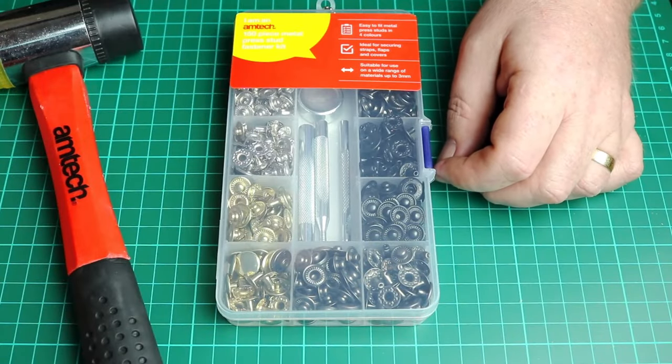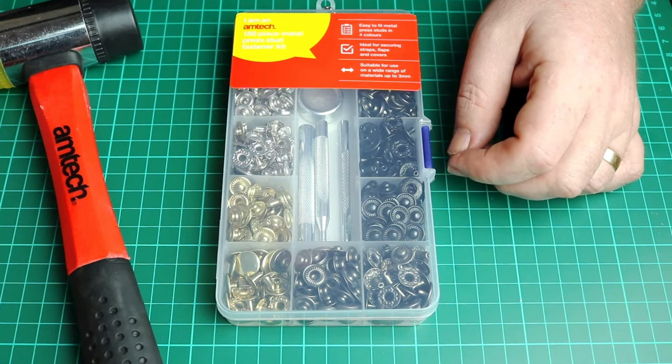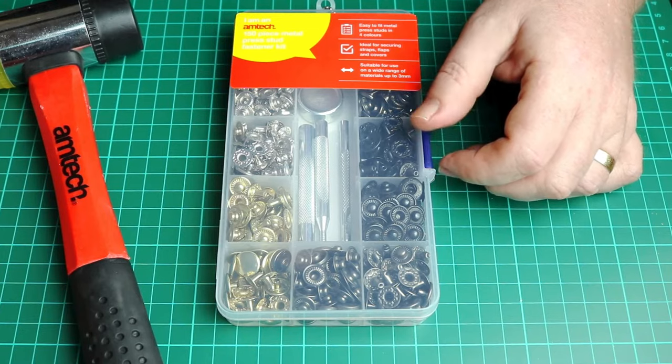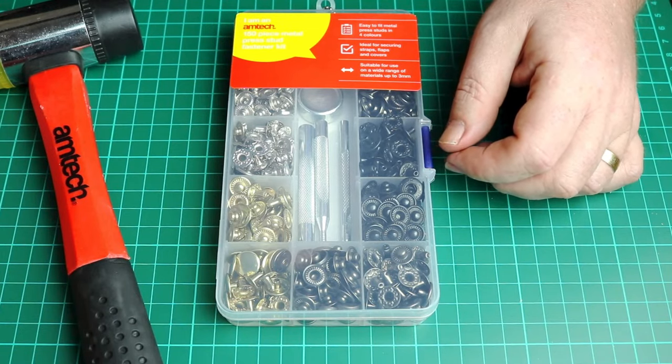The S5590 is a complete, easy-to-use metal press stud kit which is ideal for securing straps, flaps, and covers and is suitable for use on a wide range of materials up to 3mm.